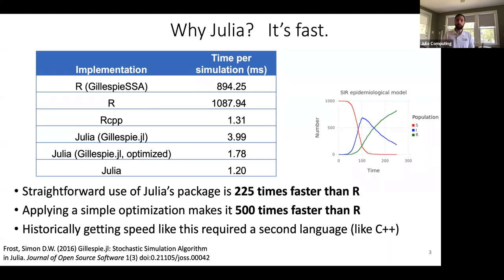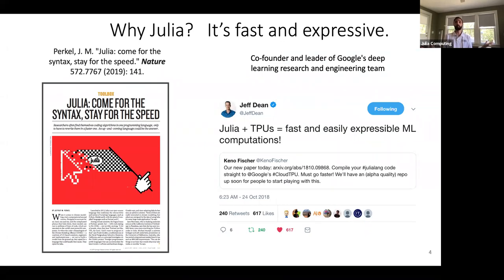Historically you've needed two languages: scientists working in one language hand off to expert programmers who re-implement it in another language that gives you the speed you need to productionize it. Julia allows you to do this all within one language. This one-two punch of being fast and expressive is captured well in a Nature paper entitled 'Come for the Syntax, Stay for the Speed.' I often think it's the other way around — folks see our speed, then realize it's also a really nice language and syntax to work with, and so they stay for the syntax.